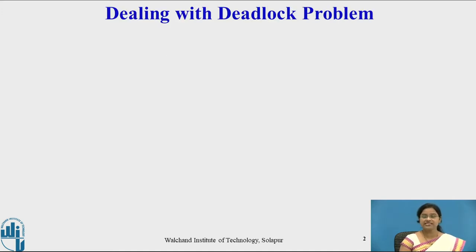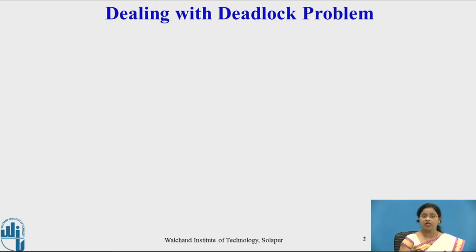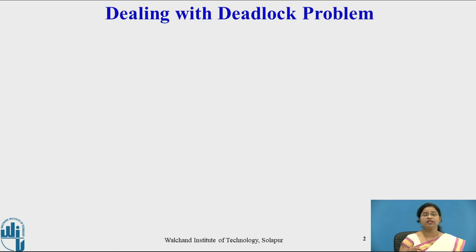First we will see how to deal with a deadlock problem. In previous videos we studied how deadlock can occur in the system. There are four necessary conditions for deadlock to occur: mutual exclusion, hold and wait, no preemption, and circular wait. If all four conditions exist simultaneously in the system, then deadlock may occur.